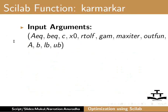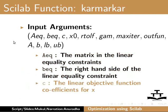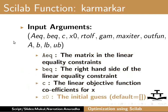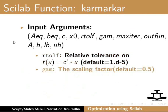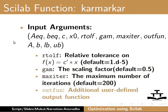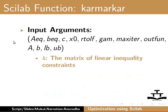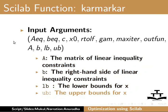Input arguments are: aeq, beq, c, x0, rtolf, gam, maxiter, outfun, a, b, lb, and ub. Aeq is the matrix in the linear equality constraints. Beq is the right-hand side of the linear equality constraint. C is the linear objective function coefficients of x. x0 is the initial guess. Rtolf is the relative tolerance on f(x) = c transpose multiplied by x. Gam is the scaling factor. Maxiter is the maximum number of iterations after which the output is returned. Outfun is the additional user-defined output function. A is the matrix of linear inequality constraints. B is the right-hand side of the linear inequality constraints. Lb is the lower bounds of x, and ub are the upper bounds of x.